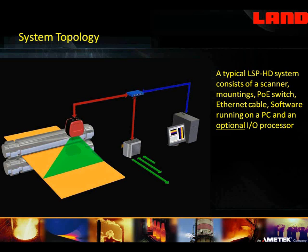Within each scan that we make, we sample 1,000 individual temperature points, regardless of the scan speed that we've got set up. We see here that we've got one connection to the scanner, and we come back to a standard network switch — nothing special, it's an Ethernet switch.